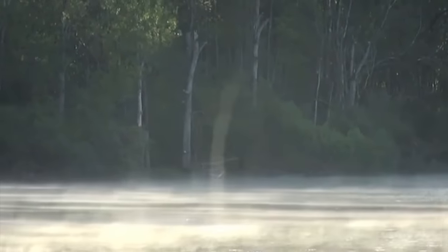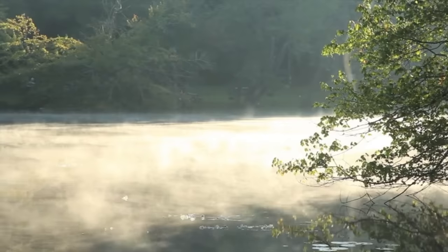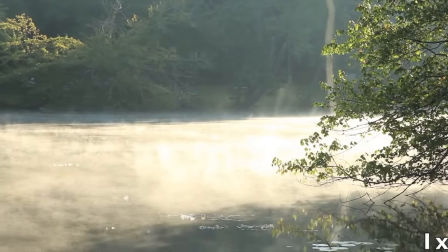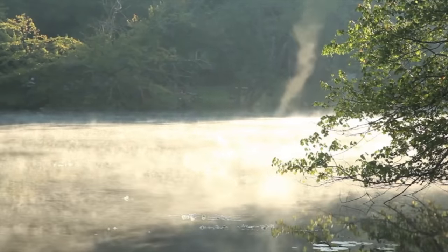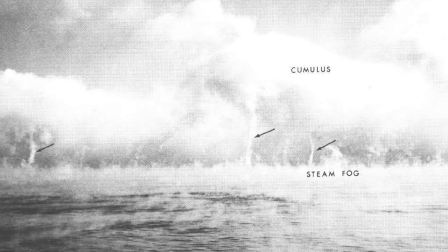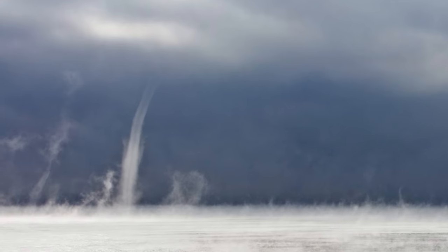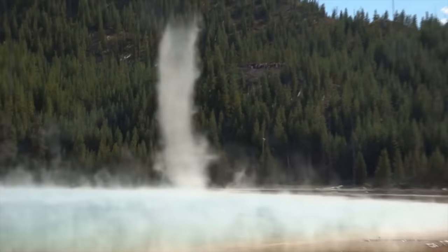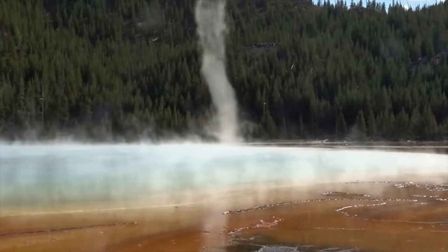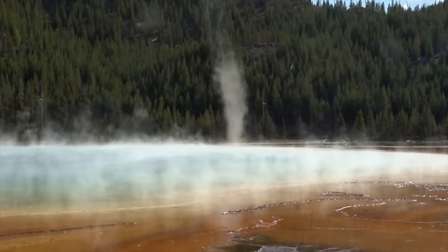Steam devils usually occur over lakes during early winter or late fall when the air is cool but lakes are still relatively warm. One example involved an air temp of negative 6°F and a water temp of 34°F. Those major temperature differences create that beautiful fog over a body of water's surface — mix that fog with cooler dry air above and a light wind and you get an unstable atmosphere and a steam devil. They've really only been discussed since the 1970s, but you can see them quite frequently at Yellowstone National Park.